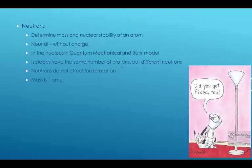Neutrons determine the mass and nuclear stability of an atom. Neutral means without a charge, so neutrons are without a charge. In the quantum mechanical model and Bohr model, they're in the nucleus. Isotopes have the same number of protons but a different number of neutrons. Basically all neutrons do is say whether you're fat or skinny. Neutrons do not affect ion formation, and their mass is one atomic mass unit.